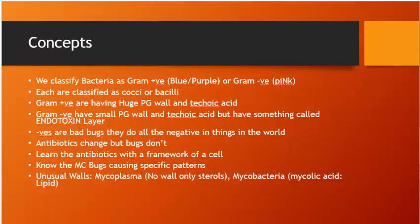Gram negatives are bad bugs. Remember: the antibiotics change but the bugs causing infection do not. For example, osteomyelitis has been caused by Staph aureus from the 1800s to today, and will be in 2500. Learn antibiotics with a framework of the cell — DNA, ribosomes, cell wall inhibitors. Know the most common bugs causing specific patterns, such as bugs not stained by gram staining, capsulated bugs, and bugs causing particular diseases.